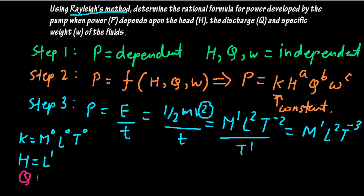Next is Q, discharge. Discharge is volume of fluid flowing per unit time, that is meter cube per second, so L³T⁻¹ would be its dimension. And W is ρ into g formula, and its dimension would be M¹L⁻²T⁻².